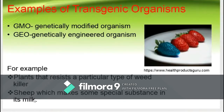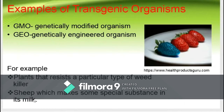Examples of transgenic organisms include GMOs and GEOs. GMOs are genetically modified organisms, while GEOs are genetically engineered organisms. For example, plants that resist a particular type of weed killer, or sheep which make some special substance in their milk. GMO and GEO are two terms often used interchangeably, but they are not the same. An organism is considered genetically modified if its genetic material has been altered through any method, including conventional breeding, while GEOs are organisms modified using techniques that permit the direct transfer or removal of genes.